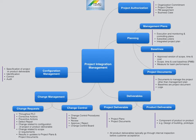The next key concept is configuration management. Configuration management activities provide better control over change requests that may affect project or product deliverables. Configuration identification involves identifying the deliverable specification that requires change control. Configuration status accounting records the status of configuration items and monitors proposed changes and their implementation status. Configuration verification and audits ensure the composition of a project's configuration items is correct, and that corresponding changes are registered, assessed, approved, tracked, and correctly implemented.